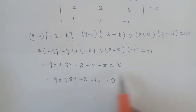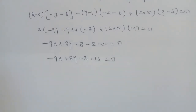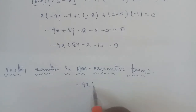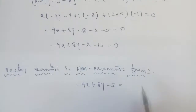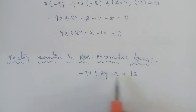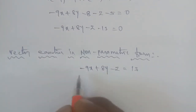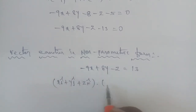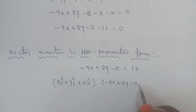The Cartesian equation is minus 9x plus 8y minus z minus 13 equals 0, or equivalently minus 9x plus 8y minus z plus 13 equals 0. Now we find the non-parametric vector equation: replacing x, y, z with i cap, j cap, k cap components, we get x·i cap plus y·j cap plus z·k cap dotted with (minus 9·i cap plus 8·j cap minus k cap) equals 13.